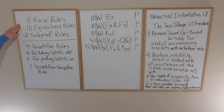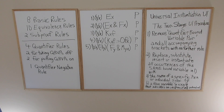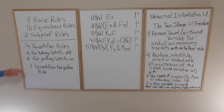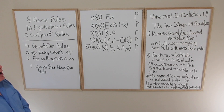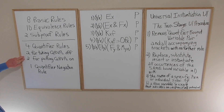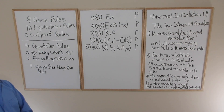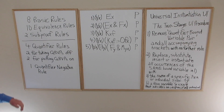To review: we started off in sentential logic with eight basic rules, ten equivalence rules, and two sub-proof rules — that's our 20-rule system. We're going to continue to use all 20 rules. When we move to quantificational logic there are going to be four new quantifier rules, plus one quantifier negation rule — five new rules in combination with the 20 rules we already had.